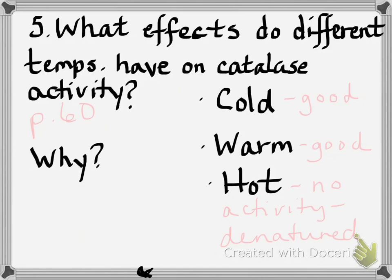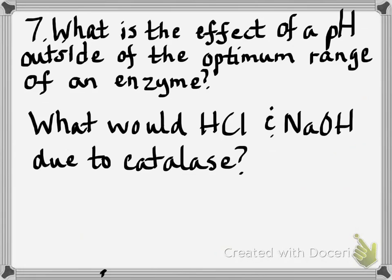Number five is next; number six is omit because we didn't do that activity. Number seven is when we did the same enzyme but this time with pH — page 62. What is the effect of a pH outside of the optimum range of an enzyme?